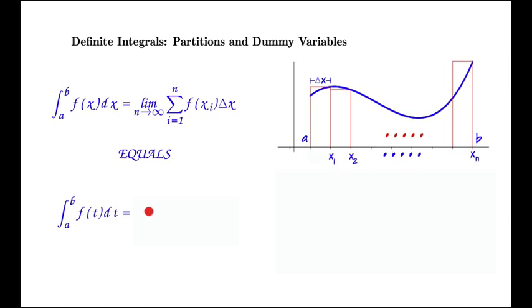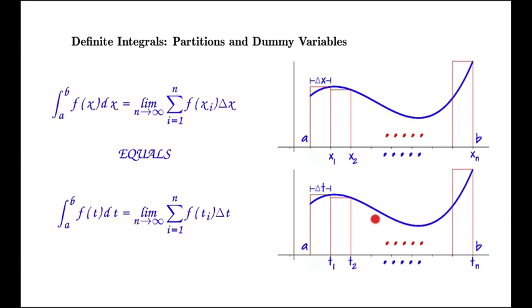If we have a t here, we would write the limit as n tends to infinity, sum i equals 1 to n of f(ti)Δt, just using t's instead of x's. We would have essentially the same picture, except we would label our width as Δt, and the intervals as t1, t2 through tn. Same idea.